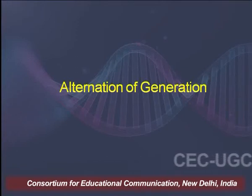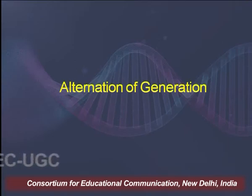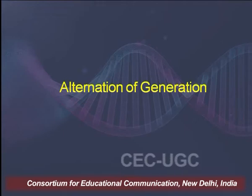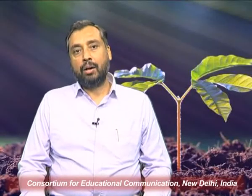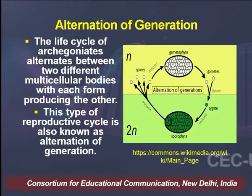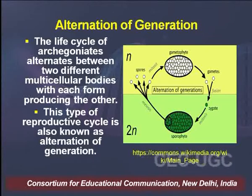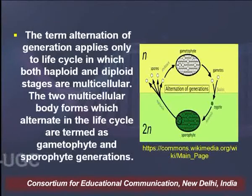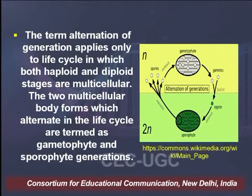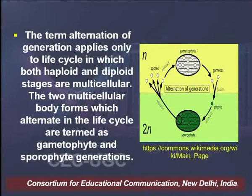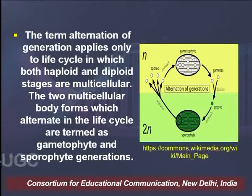Let us understand one of the very important and basic phenomena which happened amongst archegoniates — alternation of generation. The life cycle of archegoniates alternates between two different multicellular bodies, with each form producing the other. This type of reproductive cycle is also known as alternation of generation. The term applies only to life cycles in which both haploid and diploid stages are multicellular. The two multicellular body forms which alternate are termed as gametophyte and sporophyte generations.